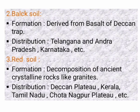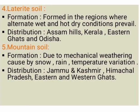Formation of Red Soil: decomposition of ancient crystalline rocks like Granite and Gneiss. Gneiss refers to a metamorphic rock. Red Soil is found in the areas of eastern parts of Deccan Plateau, Kerala, Tamil Nadu, Karnataka, and Chota Nagpur Plateau. Crops which are grown in Red Soil are Wheat, Rice, Cotton, Sugar Cane and Pulses.